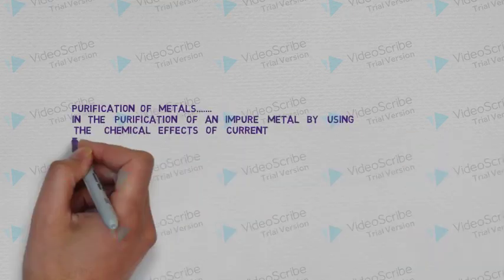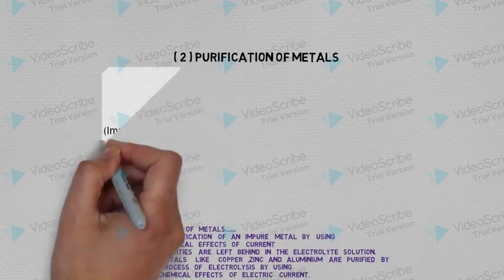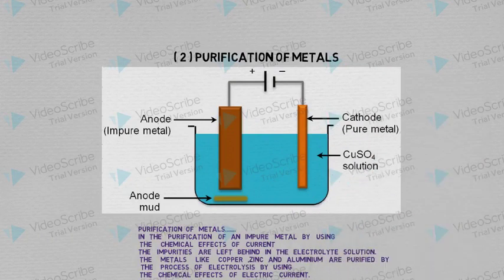We also have purification of metals. It is the purification of an impure metal by using the chemical effects of a current. The impurities are left behind in the electrolyte solution. Metals like copper, zinc and aluminium are purified by the process of electrolysis.